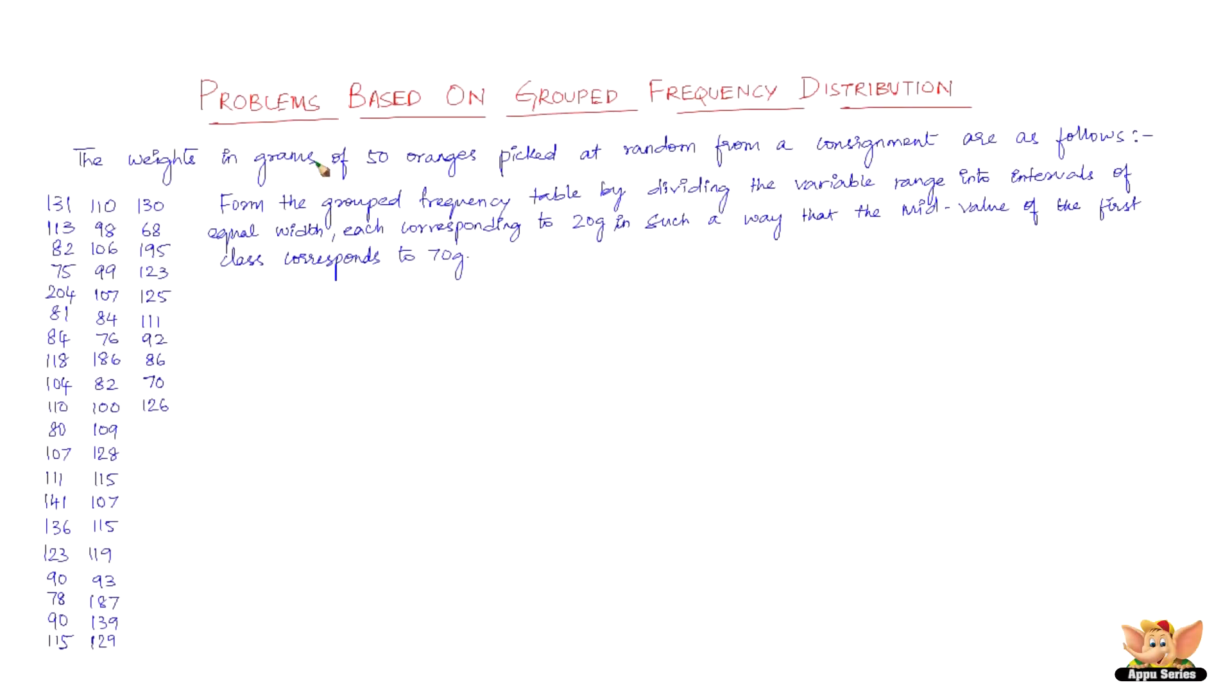In this video, let us continue to solve problems based on grouped frequency distribution. The weights in grams of 50 oranges picked at random from a consignment are as follows. These are 50 different weights in grams; some may be repeated as well.